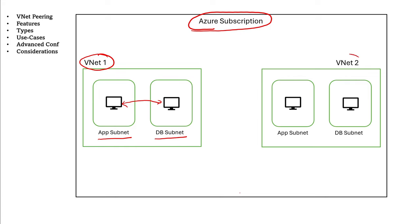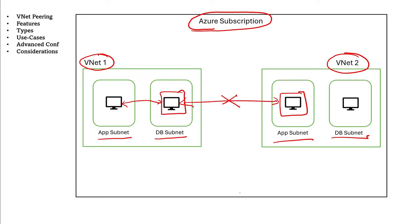Now if we create another virtual network and create a subnet in it, then the virtual machine in that subnet cannot communicate to the virtual machine in another virtual network. By default, virtual machines from one virtual network cannot communicate to another virtual network. To overcome this problem, we could assign public IPs to these servers and use them to communicate over the internet. But this is not recommended because your data will be traveling through the internet, which is against security best practices. Additionally, whenever data goes out of Azure there is an egress charge attached to it.